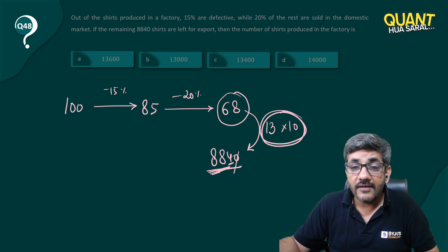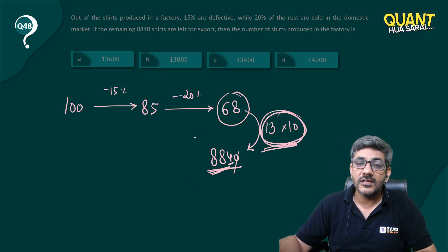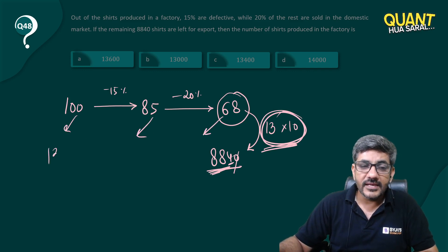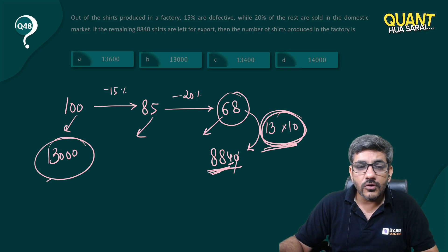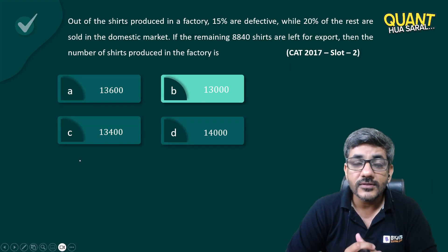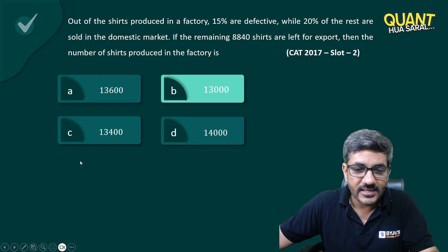So ultimately I have to do 130 times of this, so everything will become 130 times. That means the initial number of shirts would also become 130 times, and that is the right answer for this question in an aptitude way. Thank you guys.